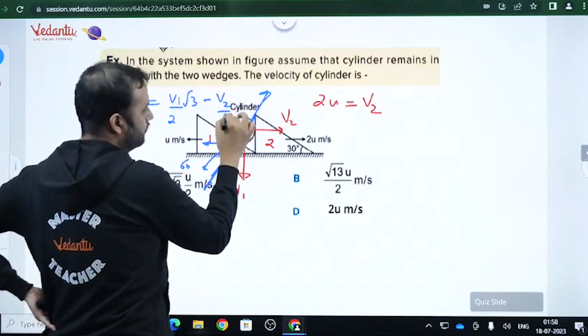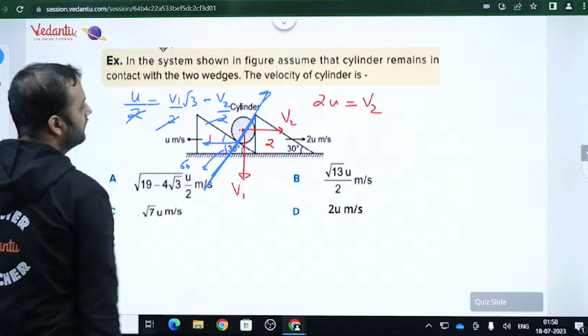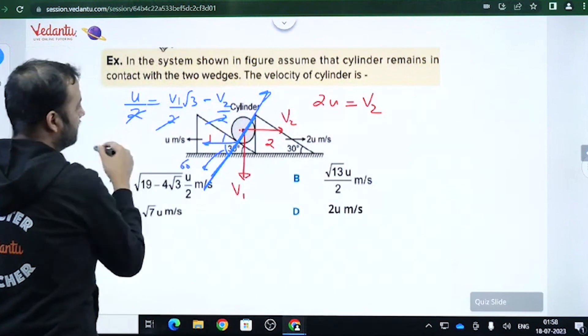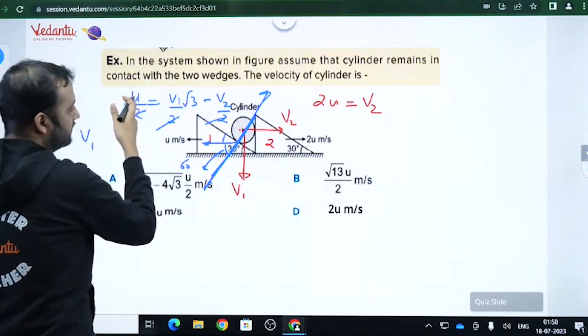So from here you can see the 2s will be gone. v2 was 2u, so if you put 2u here, what will we get? v1: 2u plus u is 3u. So that will be root 3u. v1 will be root 3u.